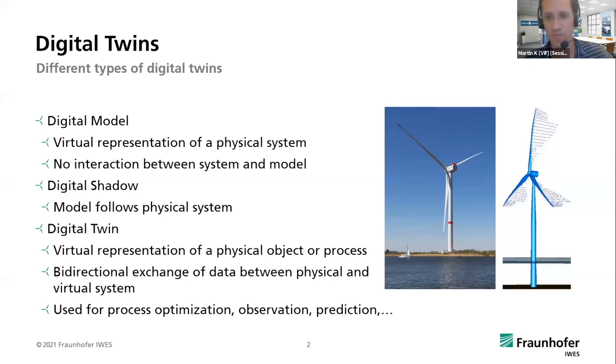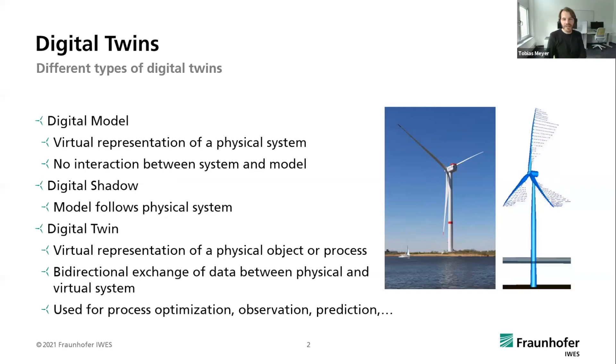There are several types or levels of digital twins, with the easiest one being simply a model where we have a real system — such as the wind turbine shown on the right, which is our research and experimental turbine — and we have a model of the system with no direct interaction between the two.